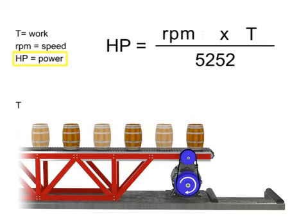If horsepower remains constant, then speed and torque are inversely proportional. As the torque increases, speed decreases to maintain constant horsepower. As torque decreases, speed must increase to maintain constant horsepower.